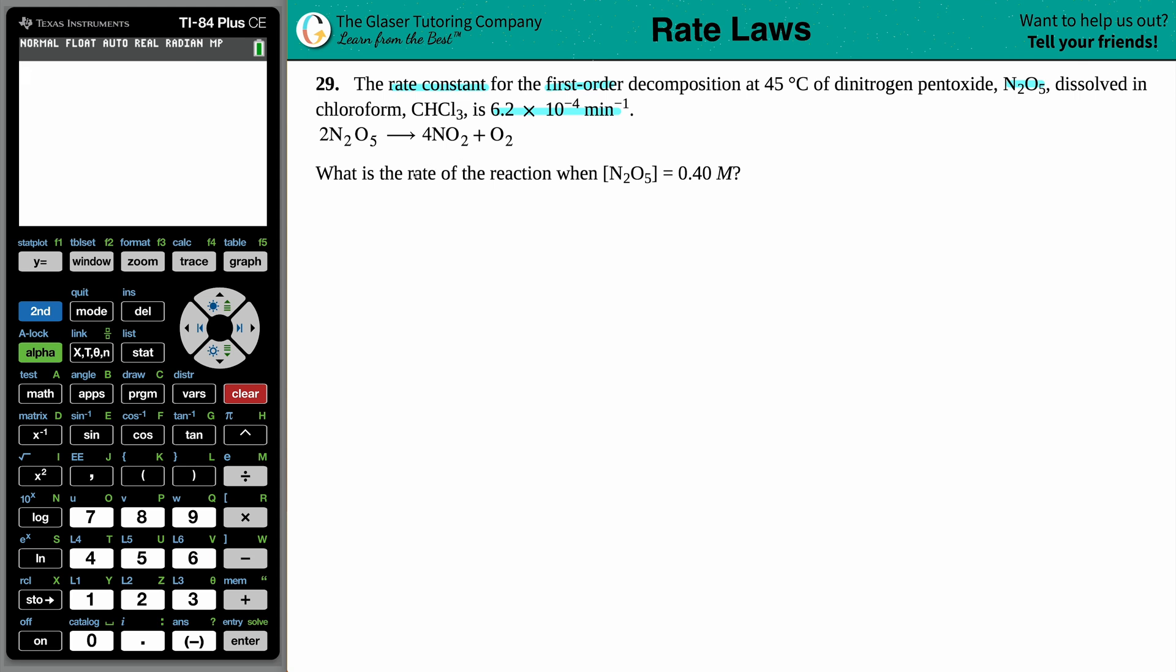And then it says, what is the rate of the reaction when the concentration of N₂O₅ equals 0.40 molarity? So let's gather some information. The main question is asking for a rate. We need to know how fast this reaction is happening when we have a given concentration. Now I know that this is a concentration because I see brackets. Anytime that you see brackets around a compound or an element, it's going to be concentration. And another piece of information is that it is in molarity, that's capital M, and molarity and concentration are the same thing.